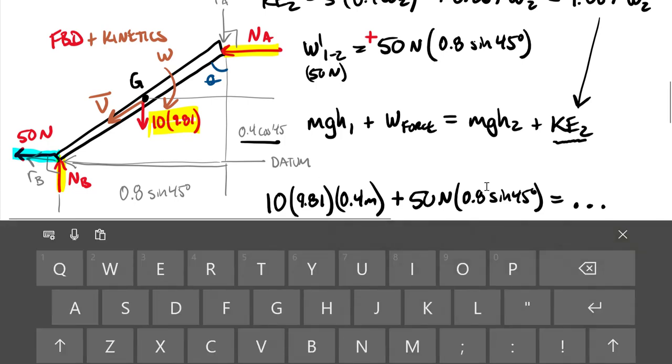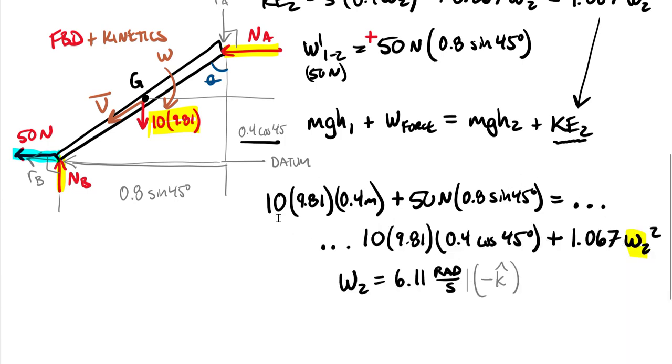The negative k-hat comes from observation, matching up with this omega here as the body rotates down this wall. Just adding my note to say this is by observation.